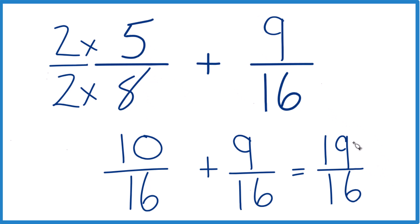And 5 eighths plus 9 sixteenths is 19 sixteenths. This is an improper fraction, though, because 19, the numerator, is larger than the denominator.